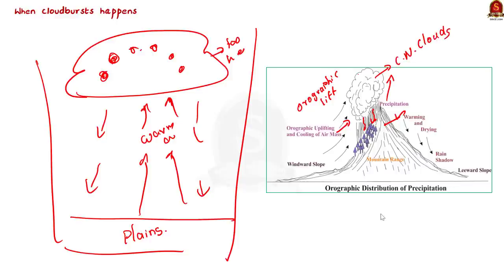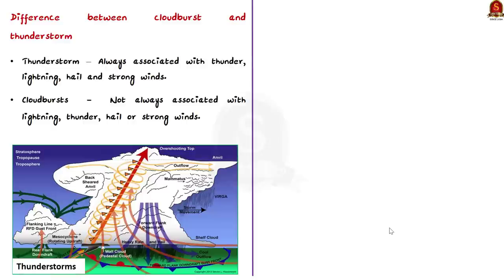Having seen the definition and reasons for cloudburst, let us now see the difference between cloudburst and thunderstorm. A thunderstorm is a violent, short-lived weather disturbance that is almost always associated with lightning, thunder, dense clouds, heavy rain or hail, and strong winds.